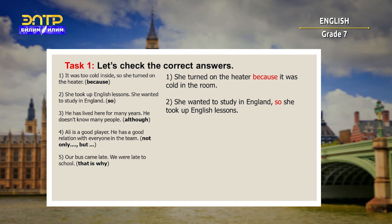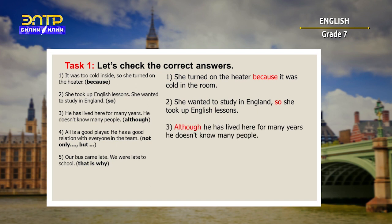Number two: we can see the same here — she wanted to study in England, so she took up English lessons. We also reversed the two parts in sentence number two. Number three: although he has lived here for many years, he doesn't know many people. In number three, we put 'although' at the beginning.